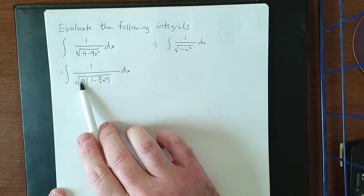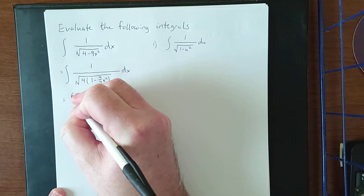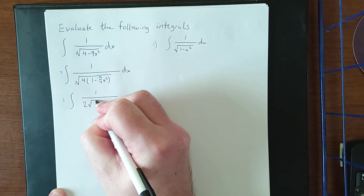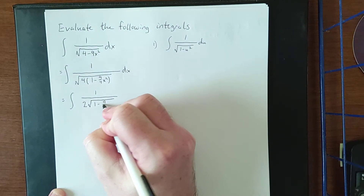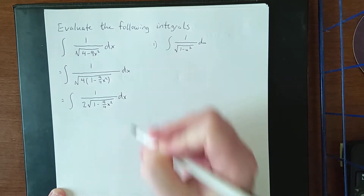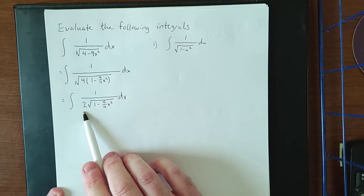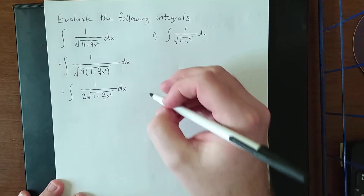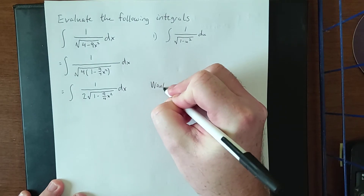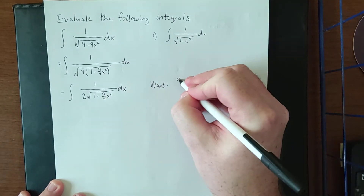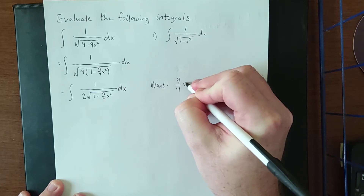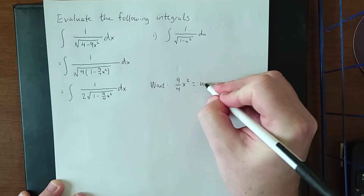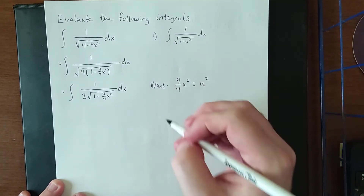The next step is to apply the square root to the 4. Because these are multiplied together, we can break them up. The 2 in the denominator is a constant multiple, so we factor the 1/2 outside of the integral. What's left inside — 9/4 x squared — is what we want to become u squared.